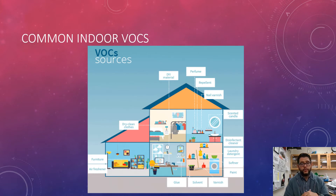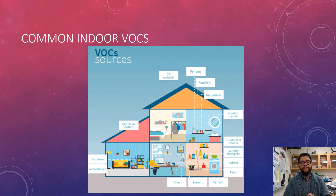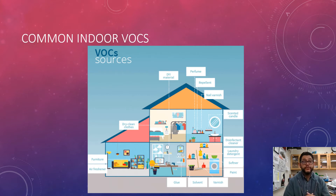Common indoor volatile organic compounds come from things like solvents, glue, varnishes, and scented candles. Basically, if you purchase something and it has that new smell — like a new carpet or new furniture with that chemical-ish smell — that's a VOC. If you purchase stuff with certain scents or odors that are supposed to be pleasant, those are actually VOCs as well, and that can lead to a cumulative effect as an indoor air pollutant.